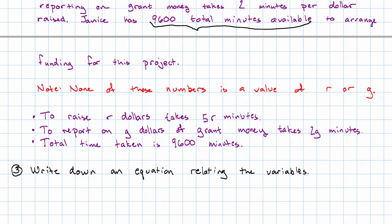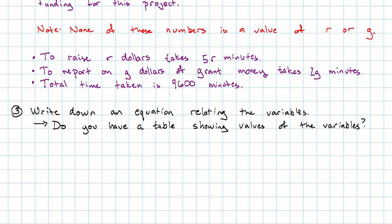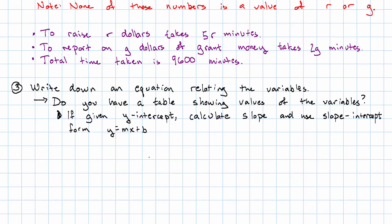So we're ready to write down an equation relating the variables. There are basically two different approaches we can take. Do we have a table showing values of the variables, or do we have a different kind of information? If we have a table showing values of the variables, then if in our table we're given the y-intercept—that is, the value of the dependent variable when the independent variable is 0—we'll figure out the slope and use the slope-intercept form. If we happen to be given both the x-intercept and the y-intercept, it'll be easier to use the form ax plus by equals ab, where this is the x-intercept and this is the y-intercept.